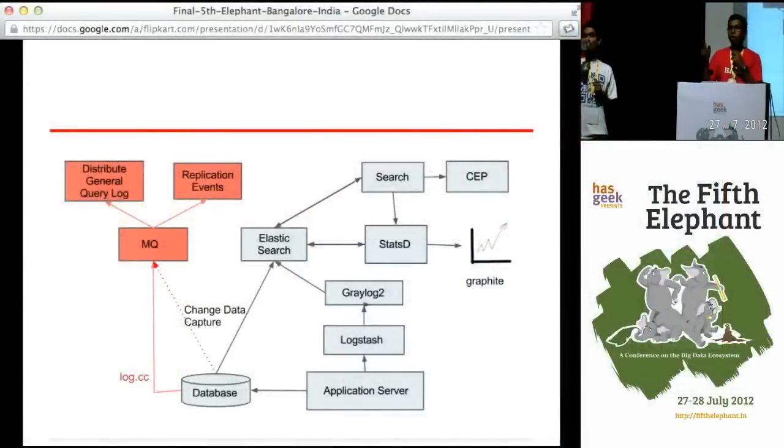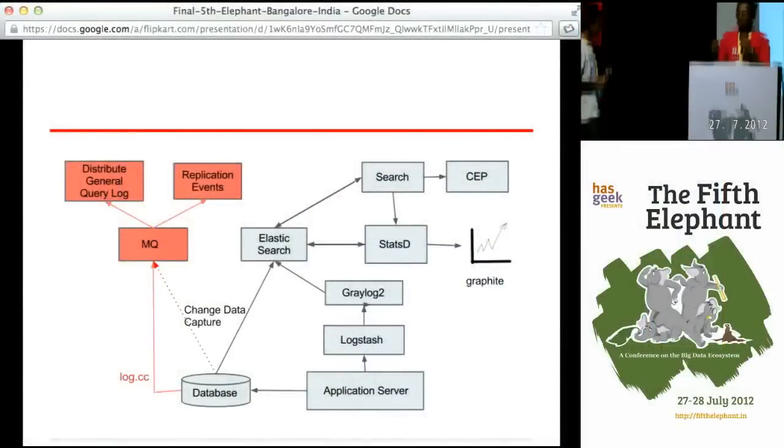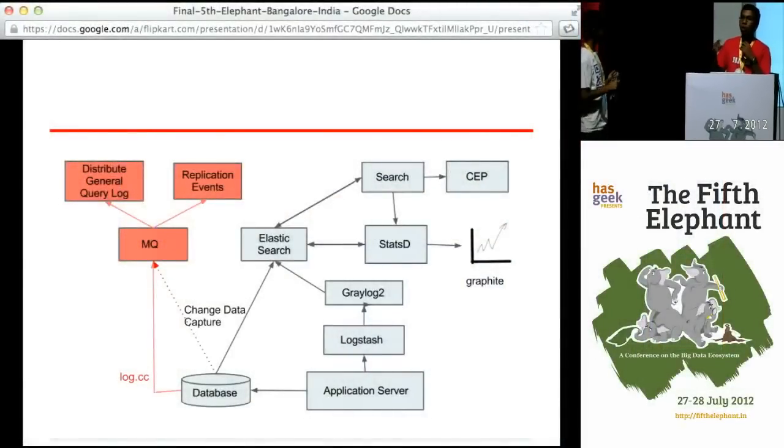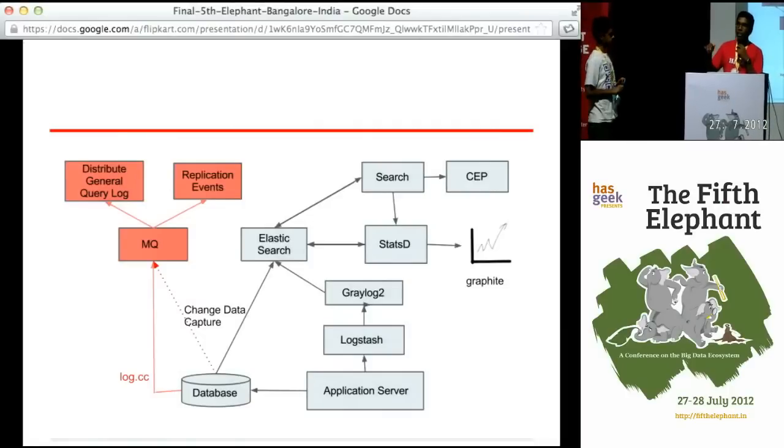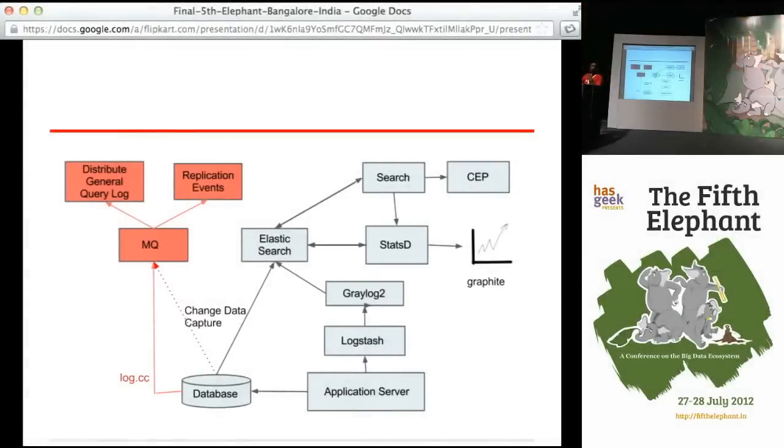Q: Does your application directly log into StatsD or does it pull from Elasticsearch? A: There are two types. StatsD can accept any information over UDP but it needs to be in a particular format. You also need the log to be available on a machine for audit purposes. So what we effectively do is have the logs available on the machine and then use stdin and stdout to send it through Logstash. The logs the application makes are primarily required for audit and will be saved forever.